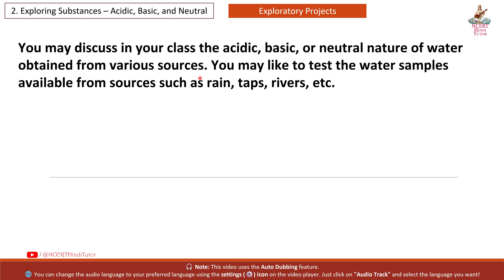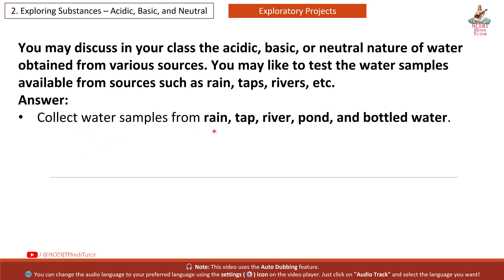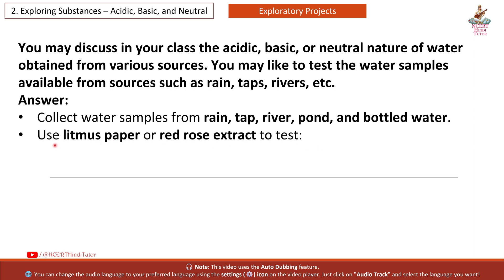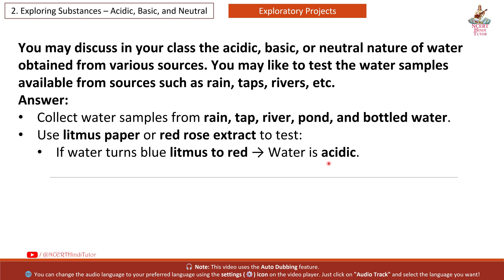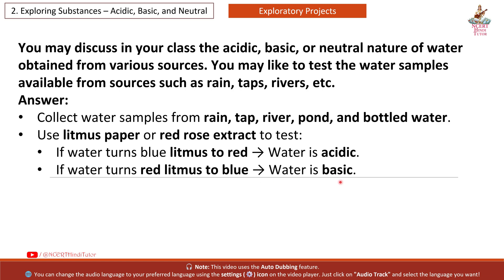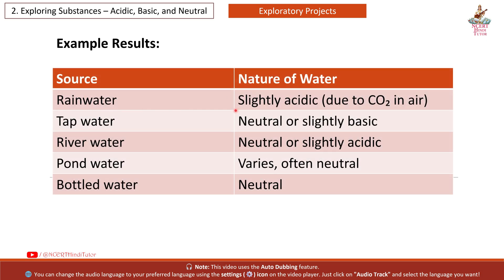You can also use red cabbage extract for different colour changes. Next question: Discuss the acidic, basic or neutral nature of water from various sources such as rain, taps, rivers, etc. Answer: Collect water samples and use litmus paper or red rose extract to test them. Results: Rain water — slightly acidic due to CO2 in air. Tap water — neutral or slightly basic. River water — neutral or slightly acidic. Pond water — varies, often neutral. Bottled water — neutral.